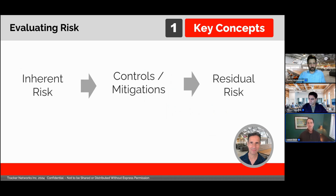We're usually already doing things to try to manage or lower the risk. We have our firewalls and our other protections. We call these activities controls or risk mitigations. They can be processes, technologies, or services that we use.